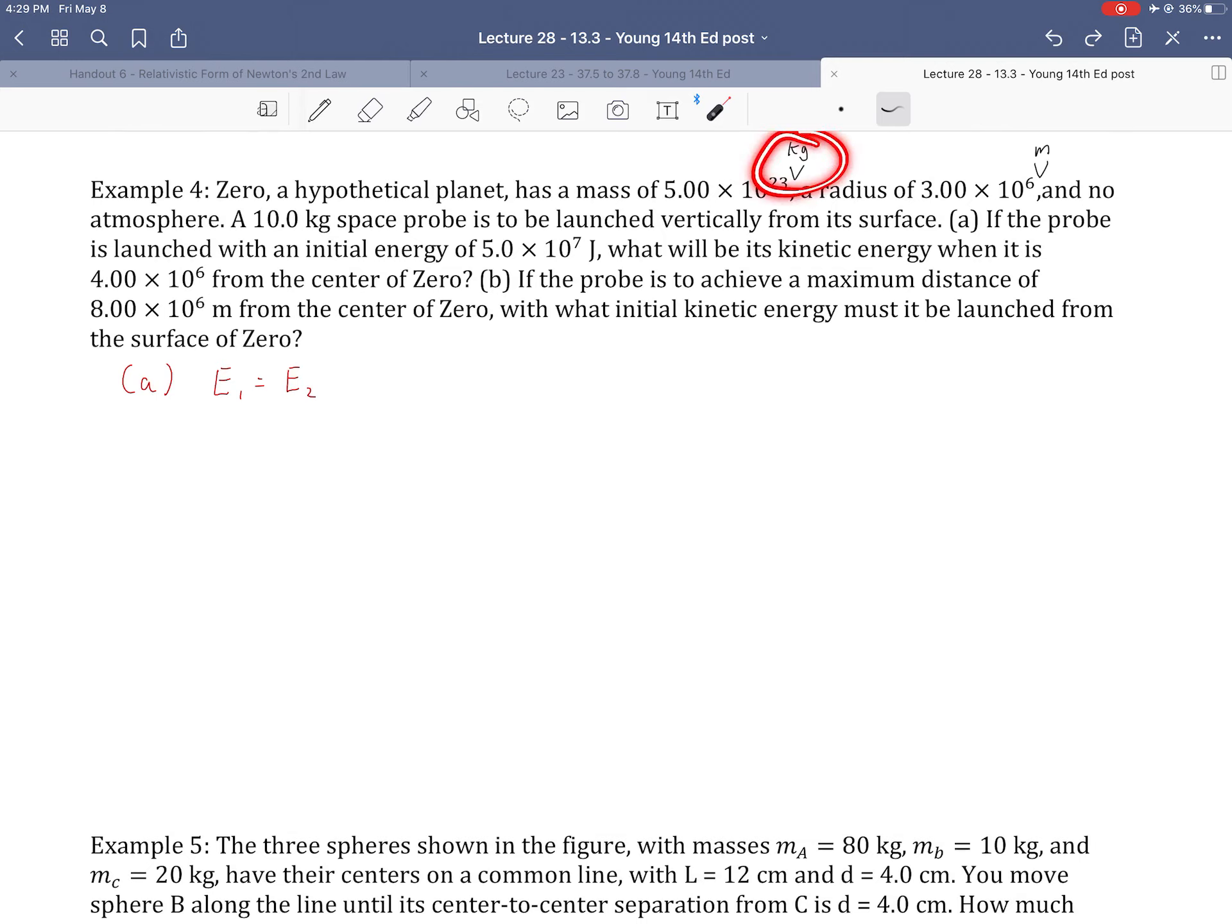All right, let's look at a couple more. So here I left off some units, so notice that I give you Zero, a hypothetical planet. It has a mass in kilograms of 5 times 10^23. So kind of similar to Earth. It's got a radius of about half Earth, 3 times 10^6 meters. No atmosphere, so you don't have to worry about any drag. A 10 kilogram space probe is launched vertically from its surface. If the probe, part A, is launched with an initial launch energy of 50 million joules, what will be its kinetic energy when it is 4 million meters from the center of Zero?